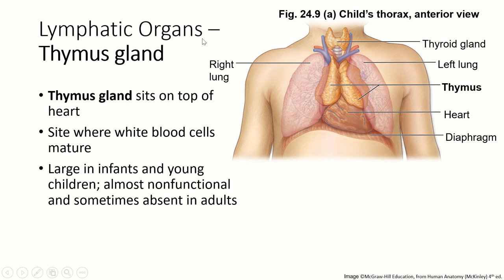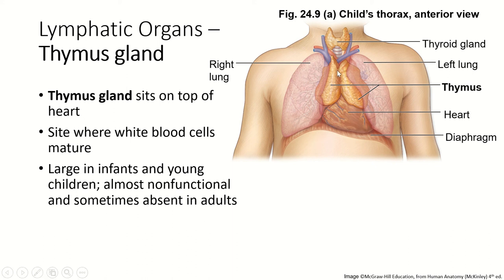We also have specific lymphatic organs. The thymus gland is one of the most important. In infants and children, it's largest; it sits on top of the heart and is the site where white blood cells mature. A lot of white blood cells made in the bone marrow travel to the thymus and finally mature into their final shape and get their final function. As adults mature and the immune system matures, the thymus gland decreases in size — to the point that in many elderly people it's actually gone. In many older people, the thymus gland doesn't do anything anymore, primarily because the immune system has matured and other parts have stepped up to take on the role of maturing white blood cells.